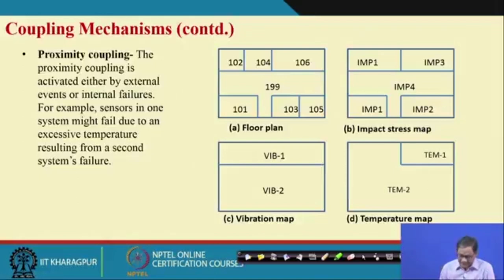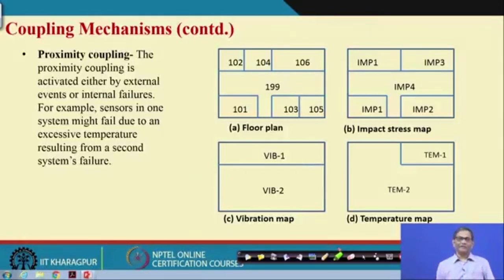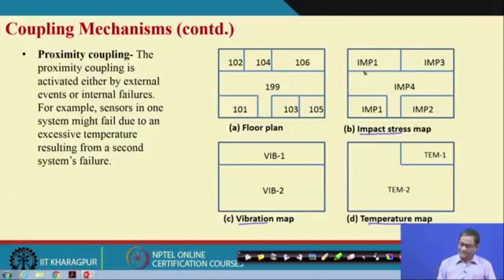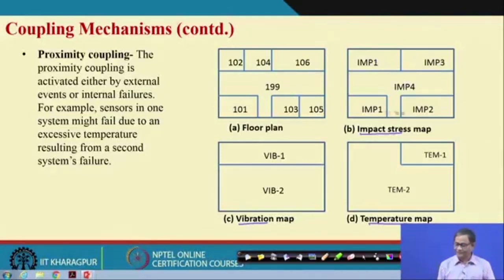Proximity coupling is related to the zone of influence. Consider a floor plan with several rooms. We have maps showing impact, vibration, and temperature distributions across the floor. Impact sources, vibration sources, and temperature zones each affect different areas and locations within the floor plan.